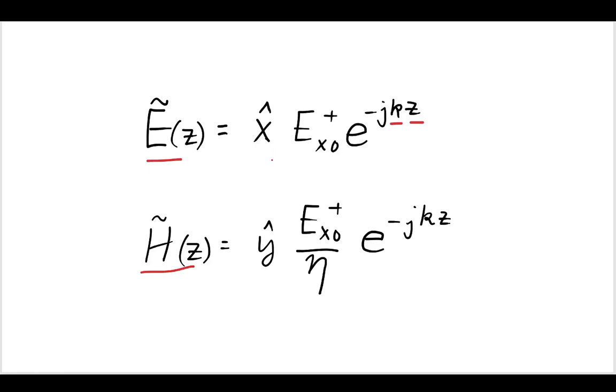And we can see that the electric field has just one directional component x, and the magnetic field has just one directional component y. So this is the most simple case of plane wave propagation in the positive z direction in a lossless media.